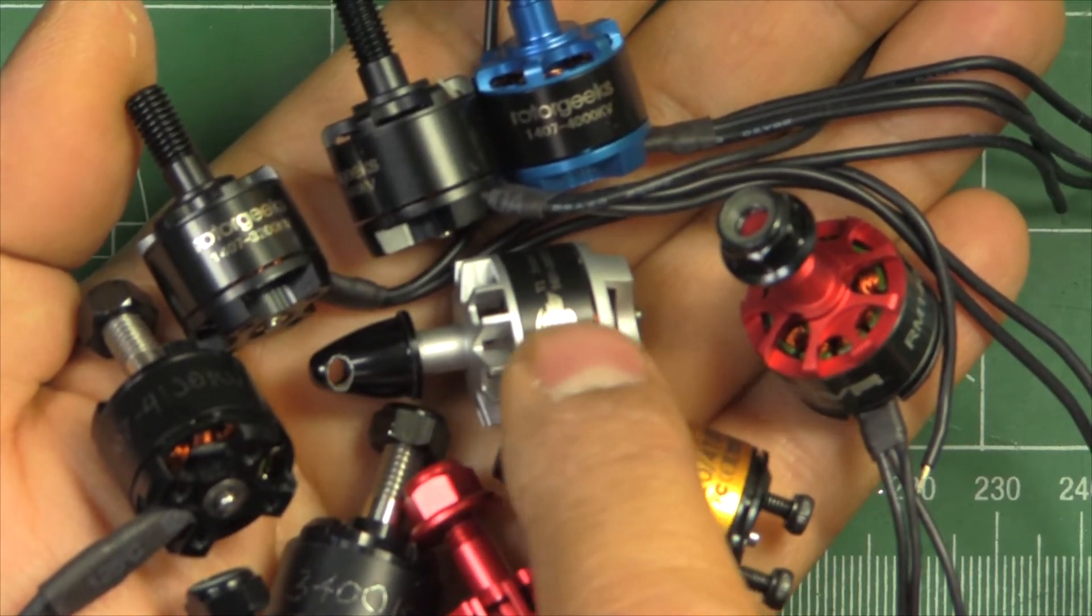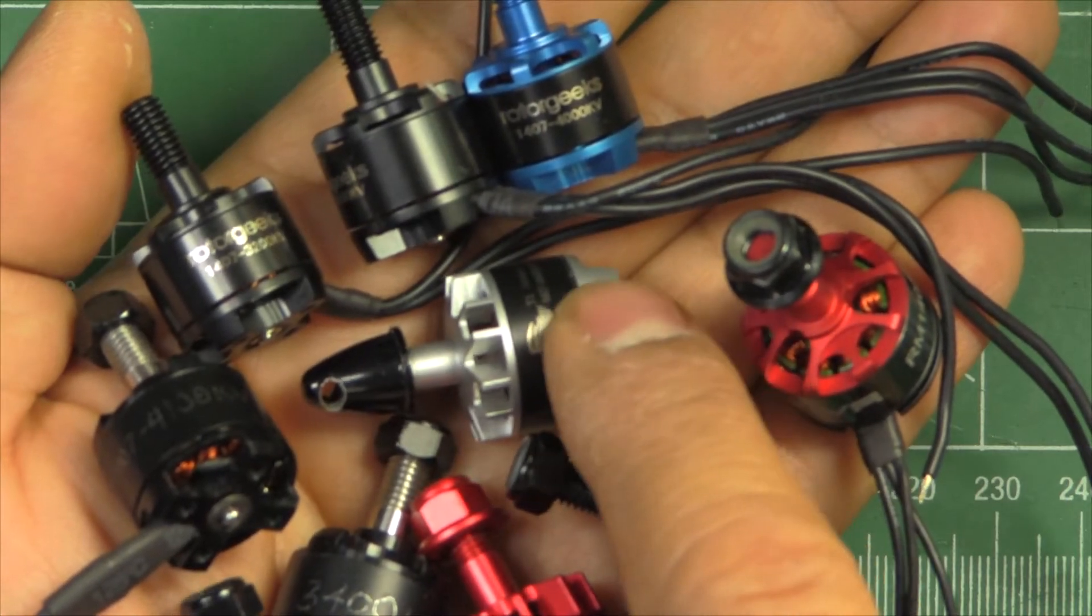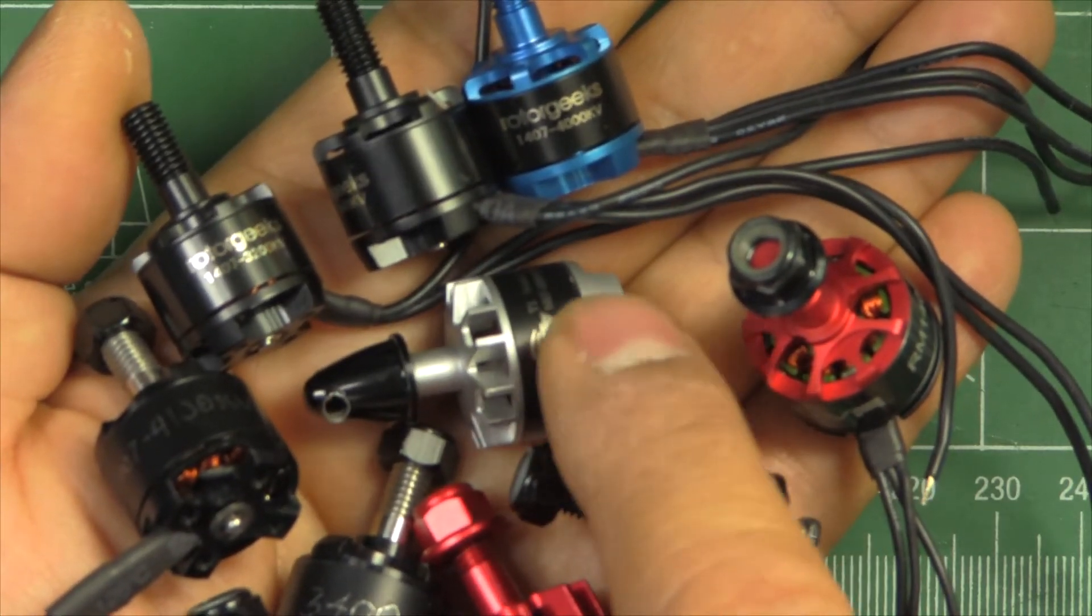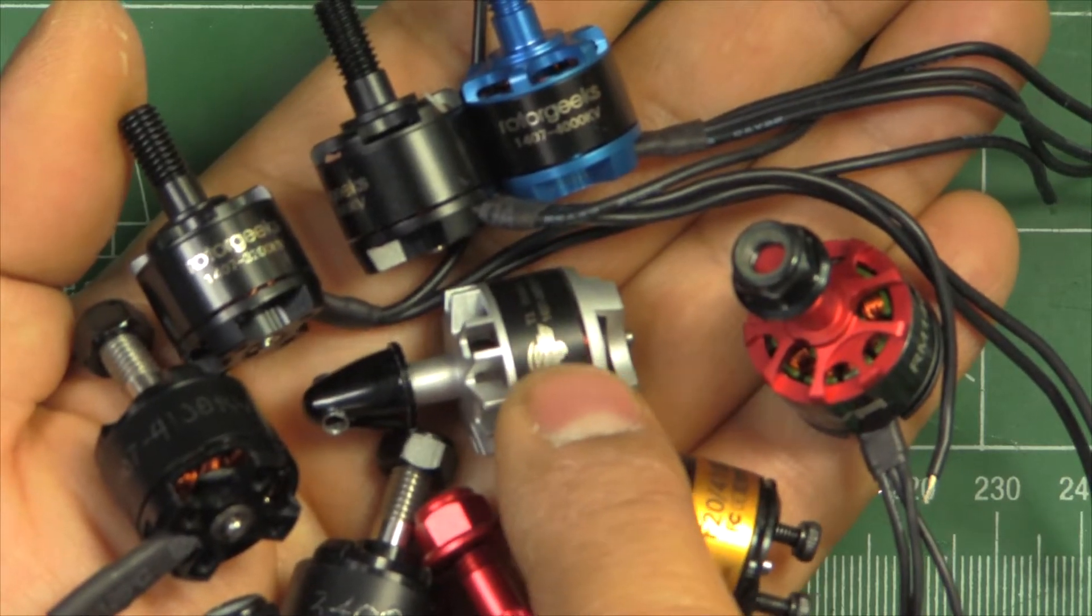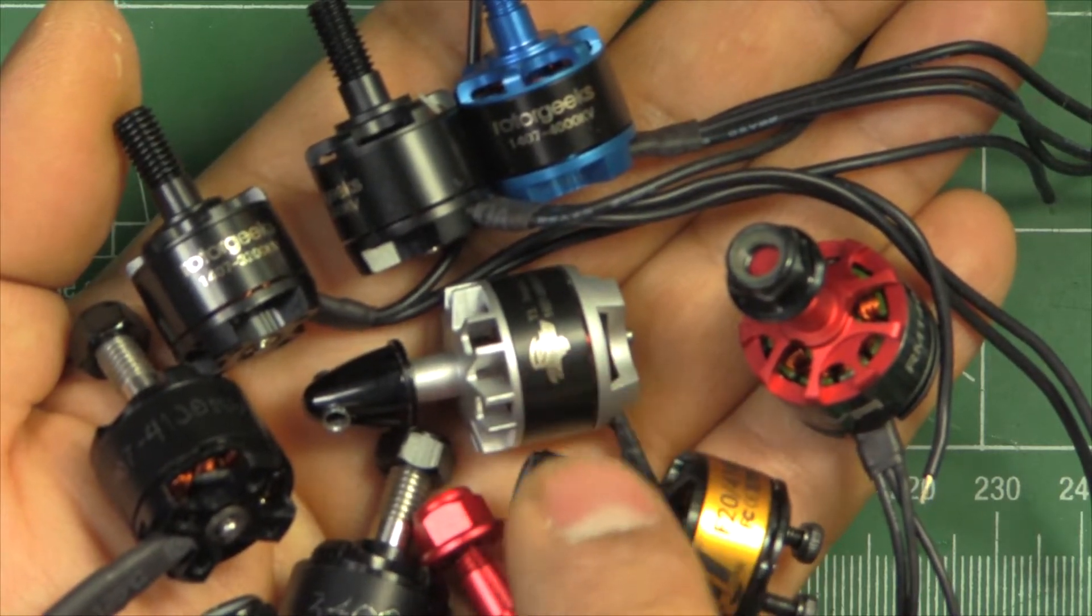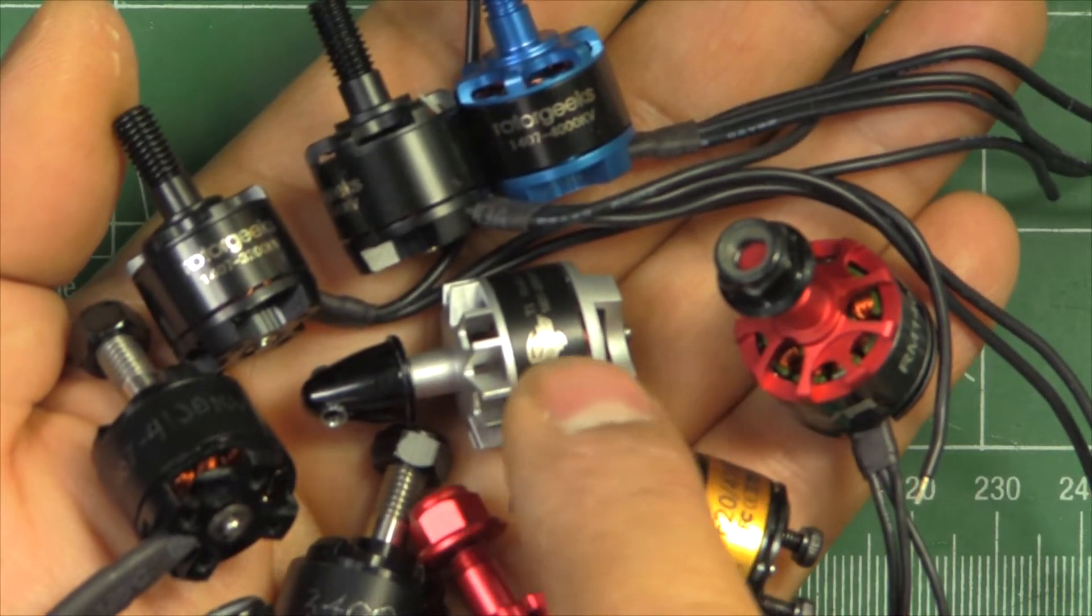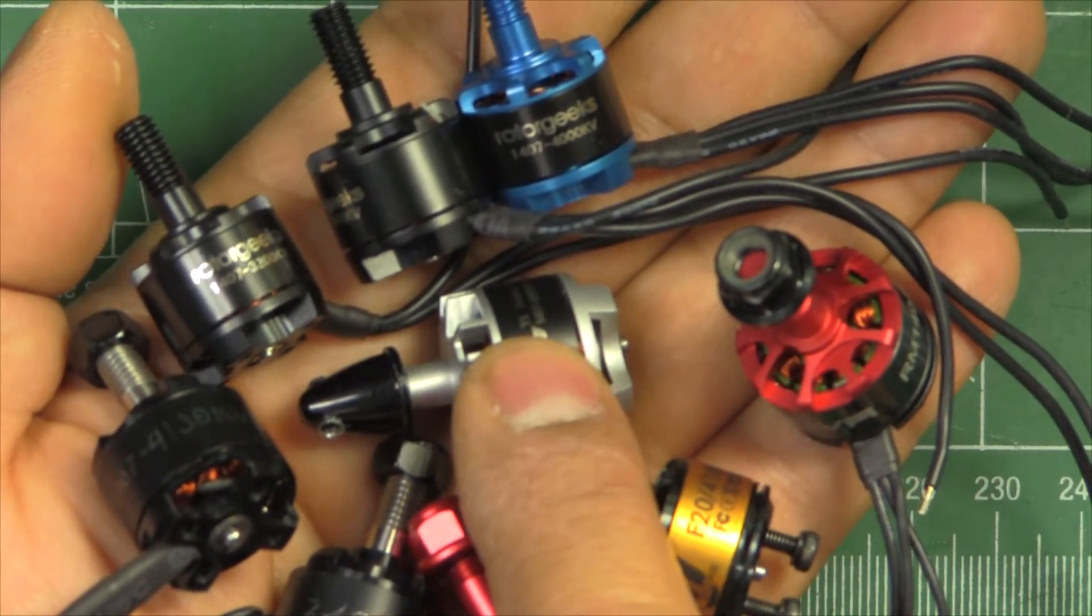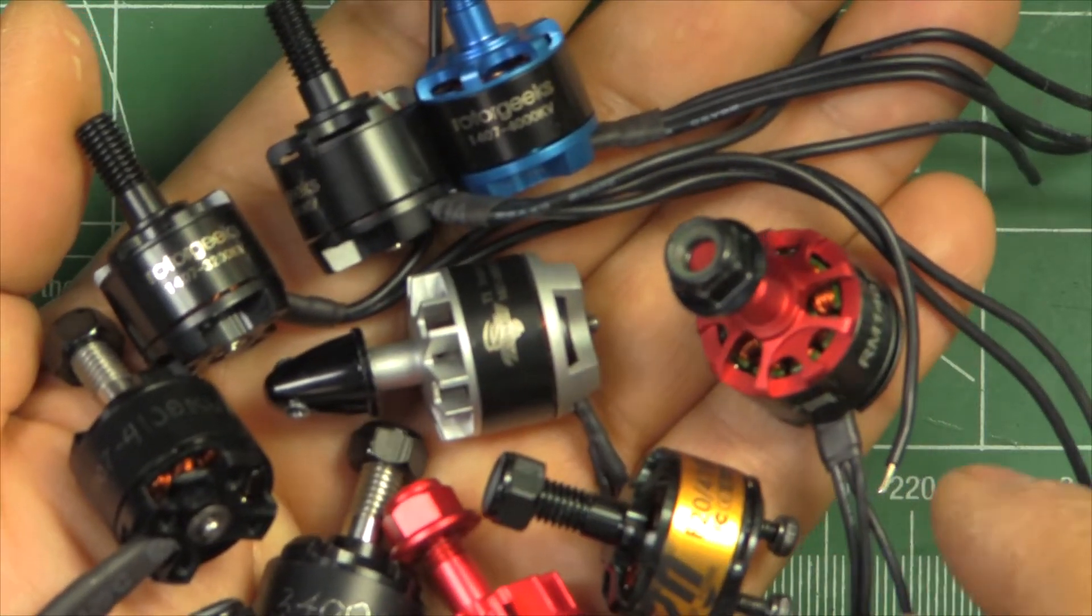current 1407 king, the Brother Hobby 1407 3600. This motor pretty much set the bar for the 1407 class of motors, widely used in 3-inch and some 4-inch, even 5-inch applications.